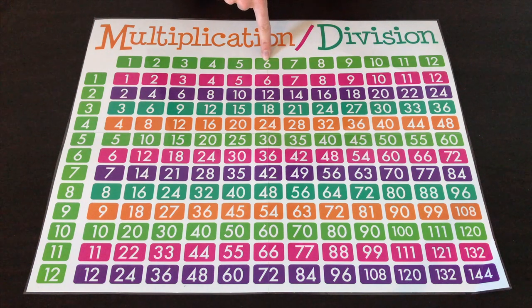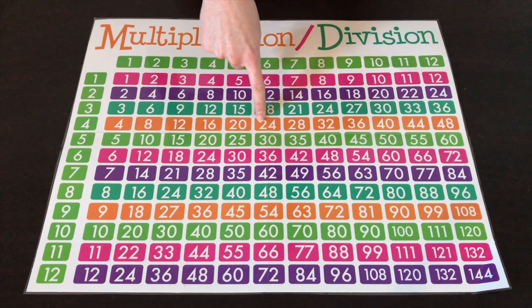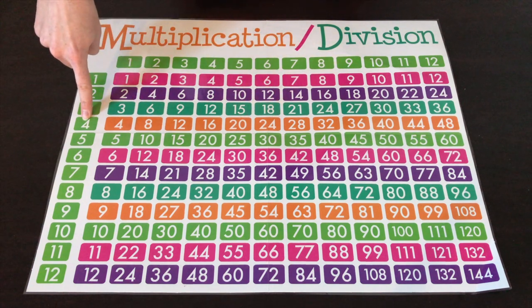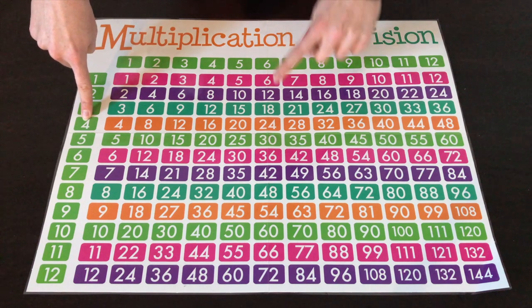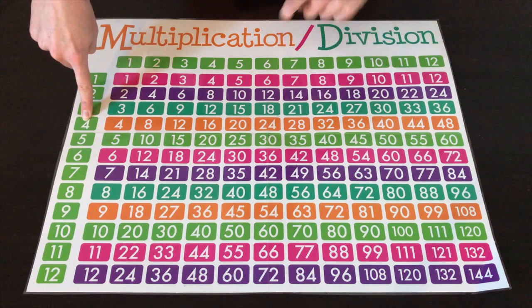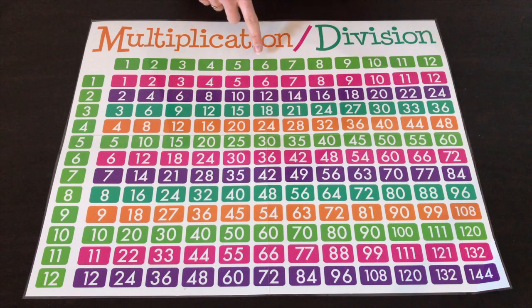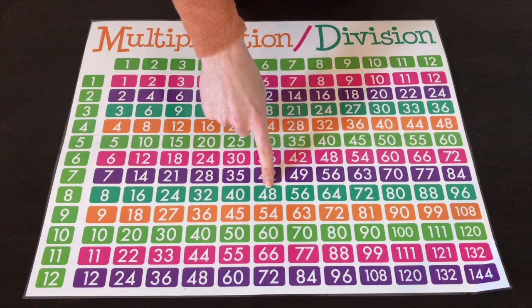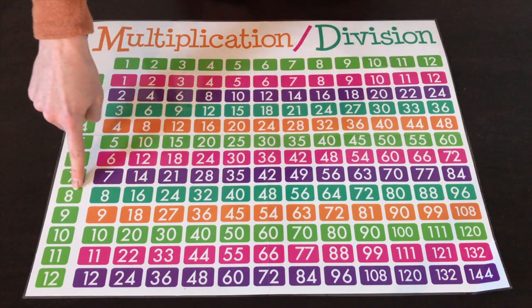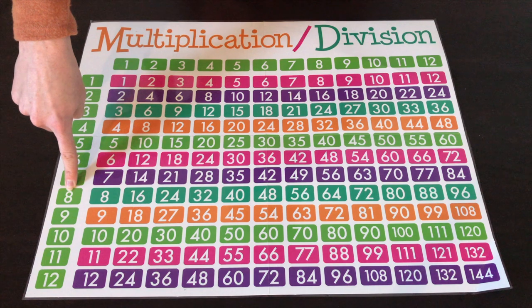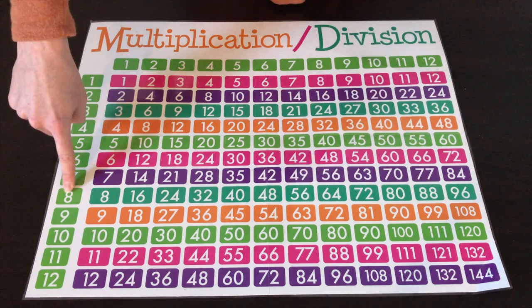Let's try another example: 24 divided by 6. Have the child put their finger on the 6 at the top, slide down until they reach 24, then slide across to find the answer — 24 divided by 6 is 4, because all those numbers are connected on the chart. For 48 divided by 6, once again start at the 6 at the top, scroll down until you reach 48, then go across and find that the answer is 8. So 48 divided by 6 is 8.